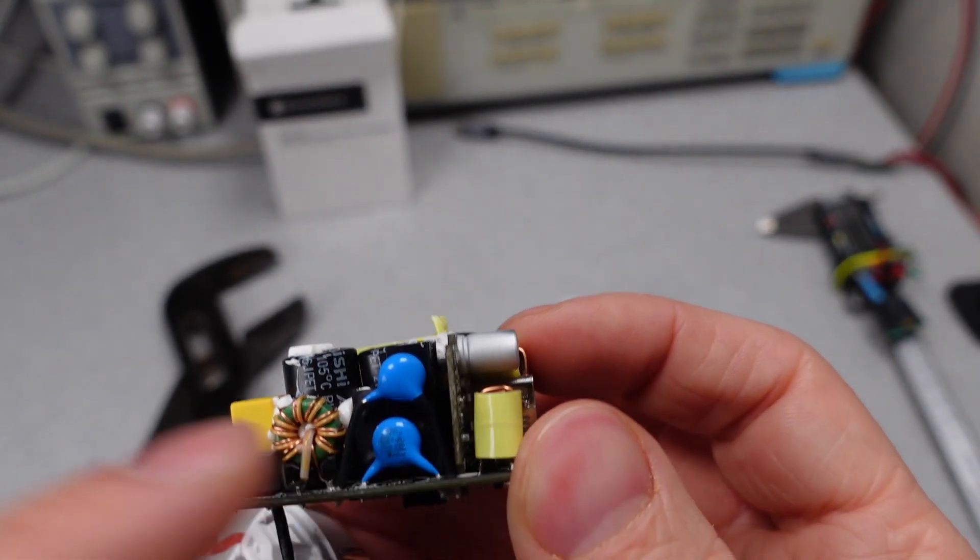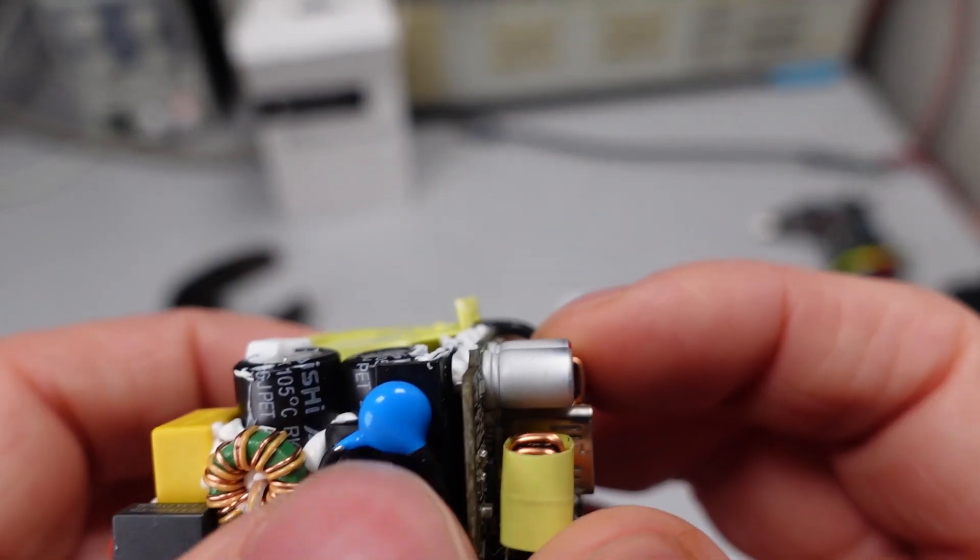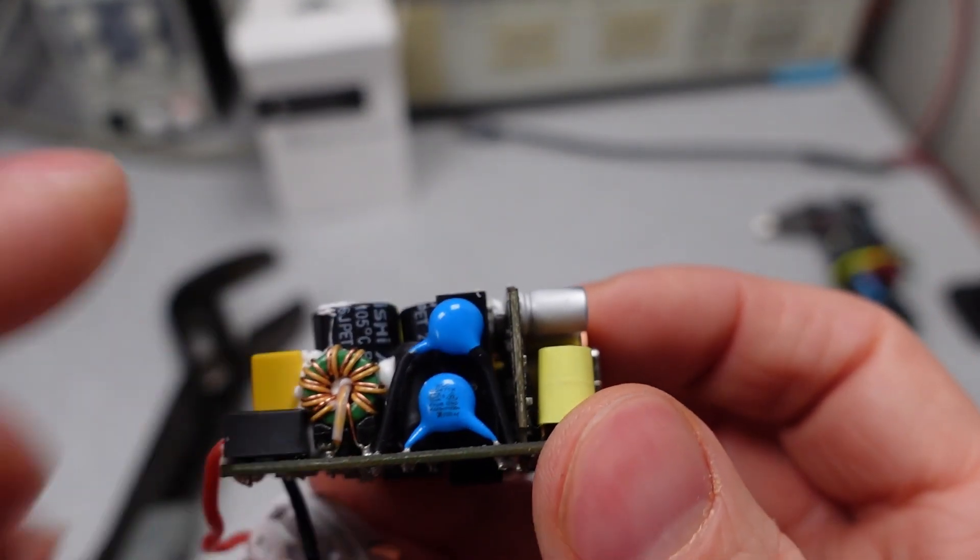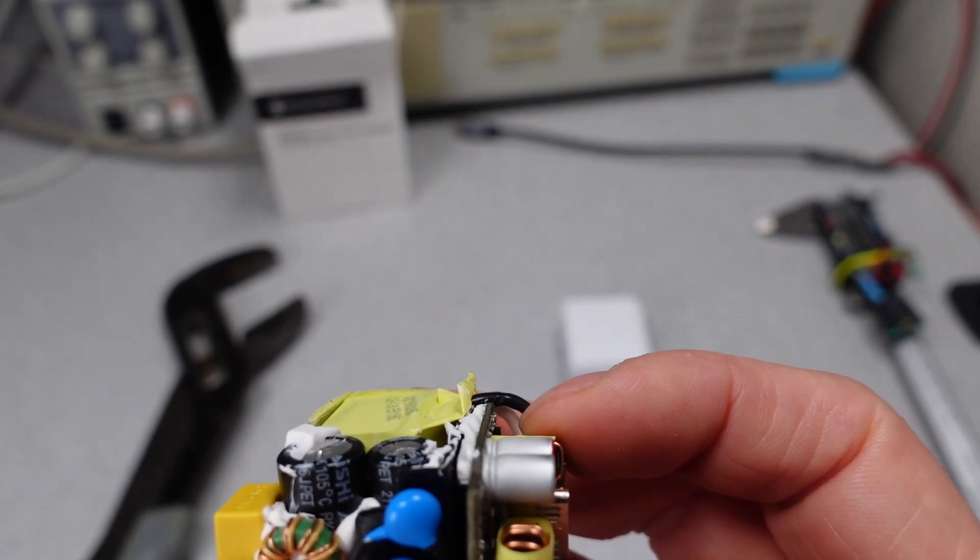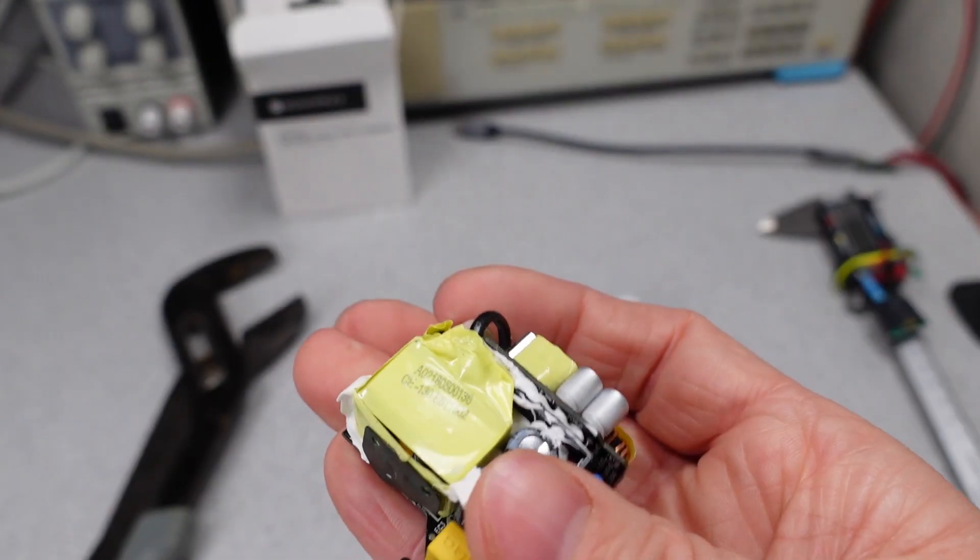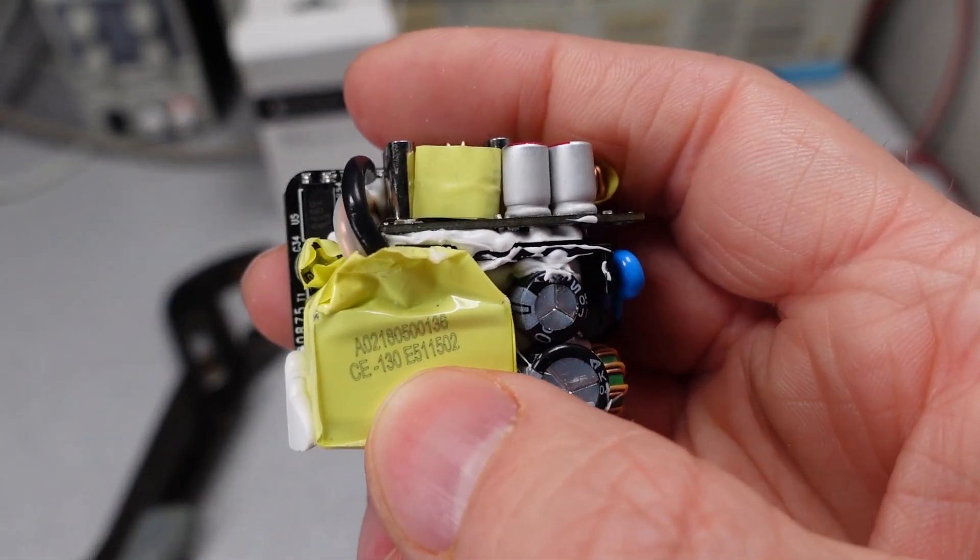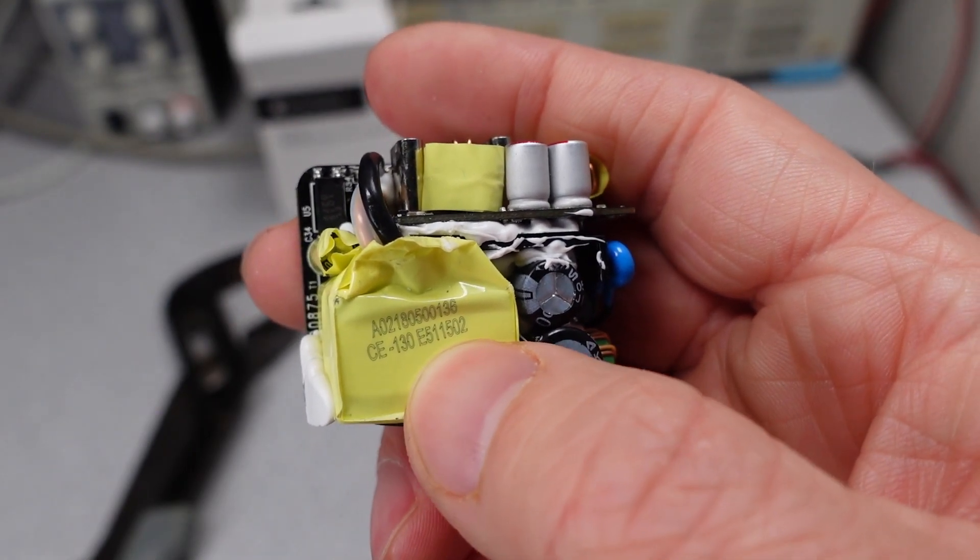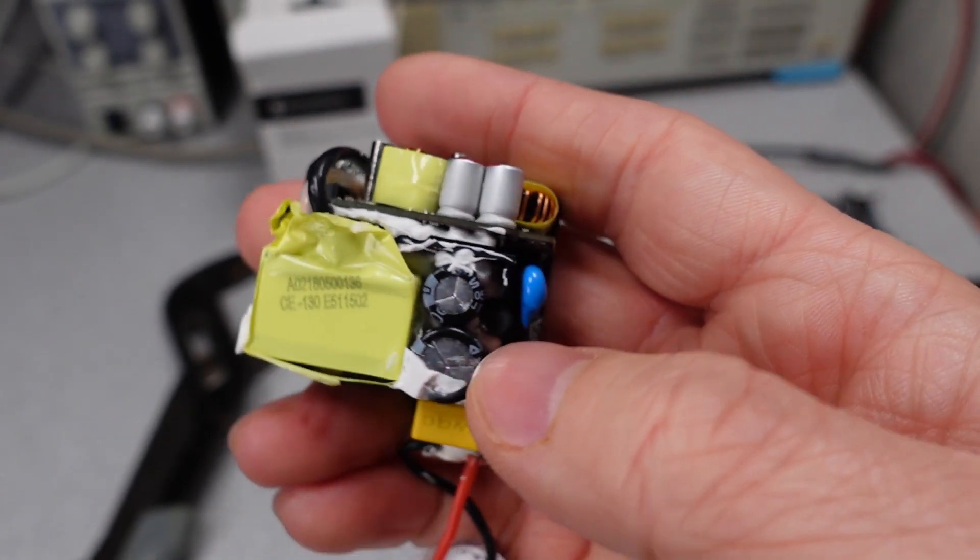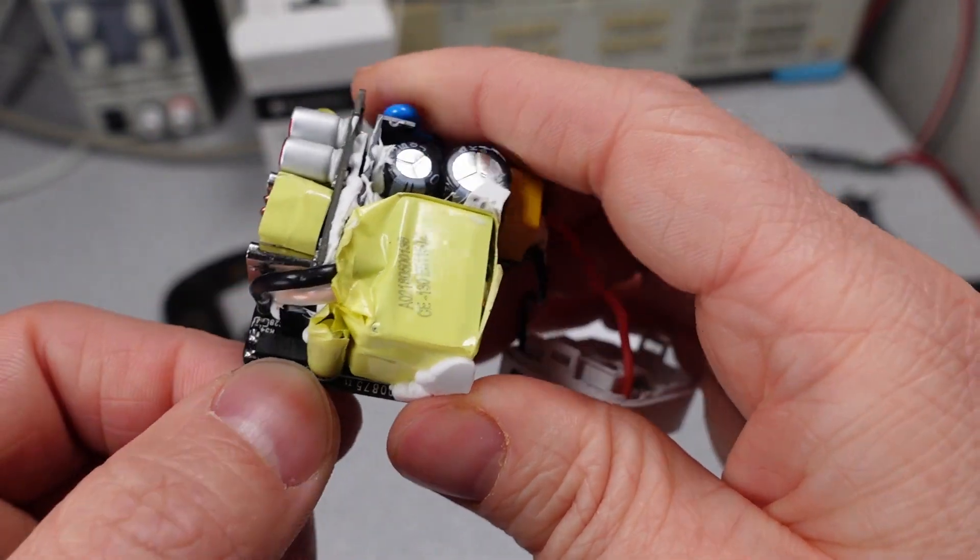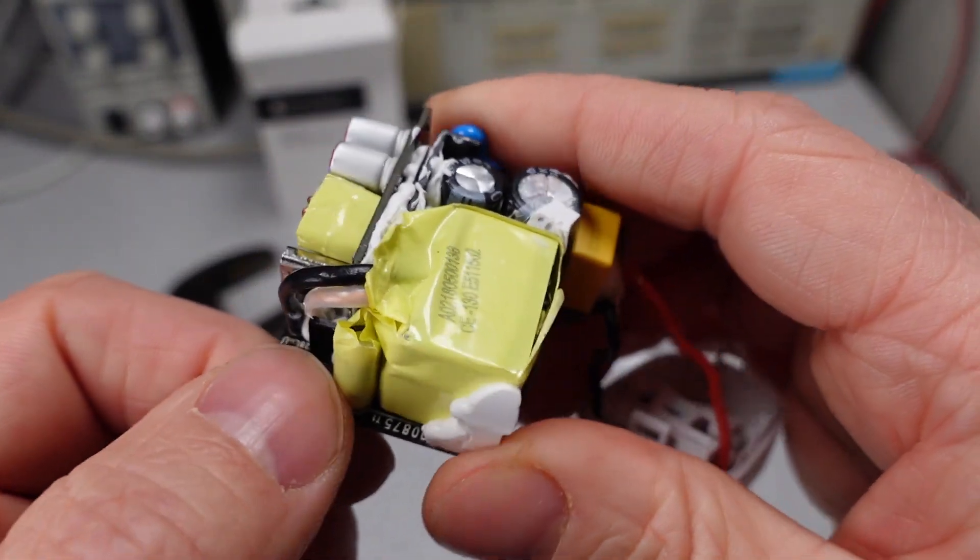These two components here, which are 470 picofarad capacitors, both of these also have safety listings. So these are proper rated components. When we look at our transformer, we can see that it has an E number on the top. So this is also telling us that this is a safety listed transformer. And also our optocoupler, which we already looked at, has a safety listing.